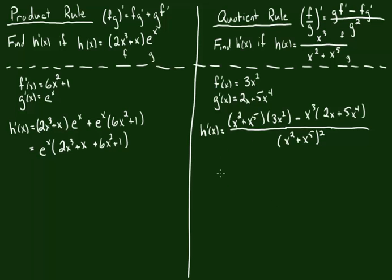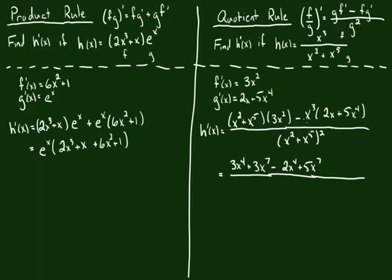This is the derivative, but it's unsimplified and a bit messy, so let's simplify it. We're going to distribute the 3x squared to everything, giving us 3x to the fourth plus 3x to the seventh. Next, we take x cubed and distribute it through the other factor, giving us minus 2x to the fourth minus 5x to the seventh — being careful to bring the negative sign through. The denominator stays exactly as it is.